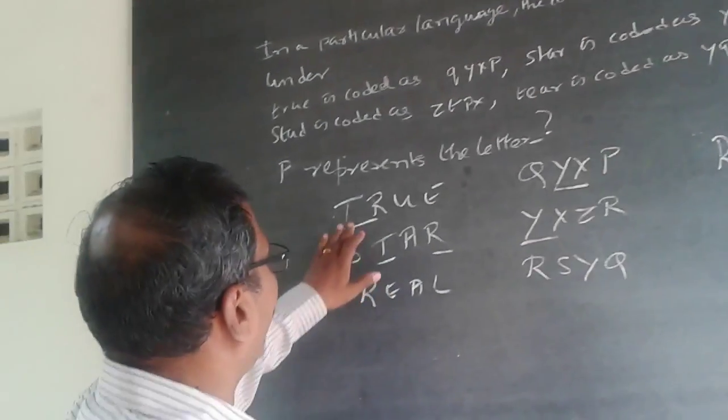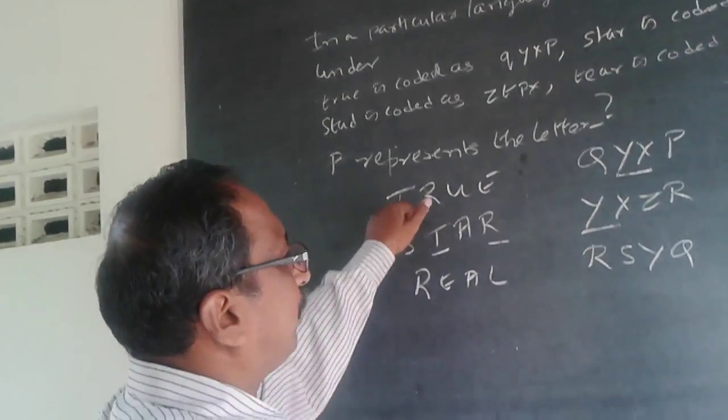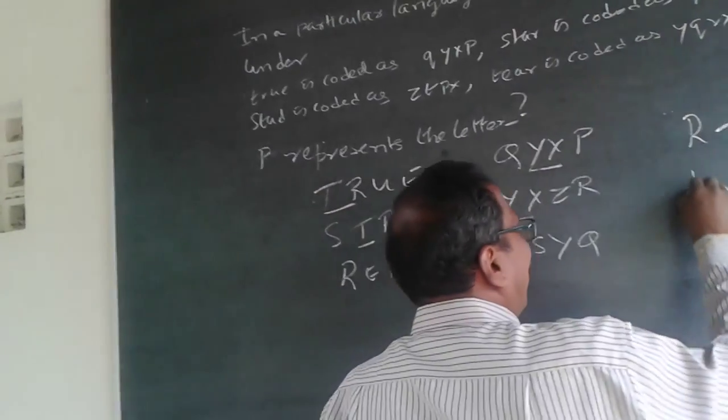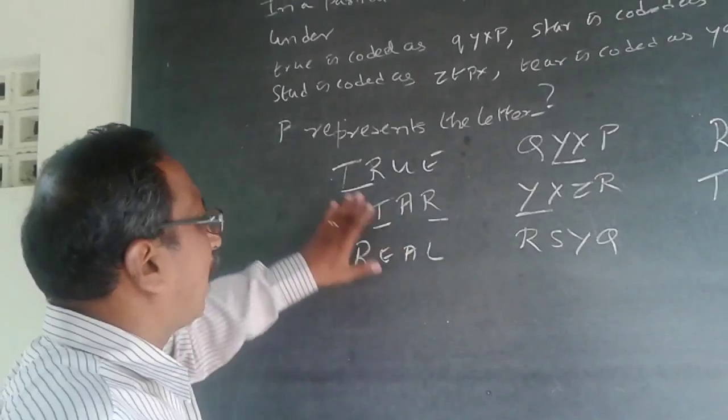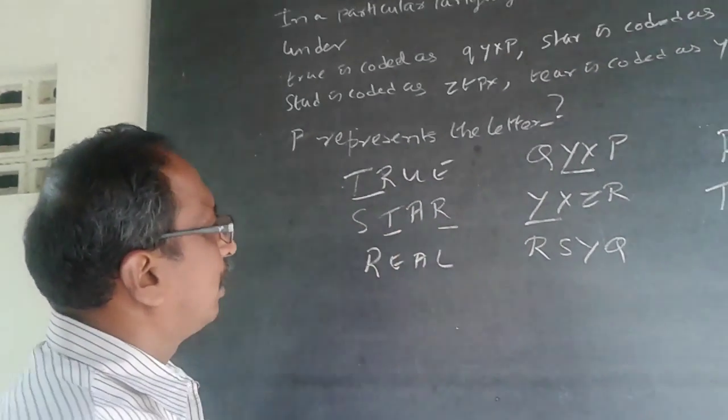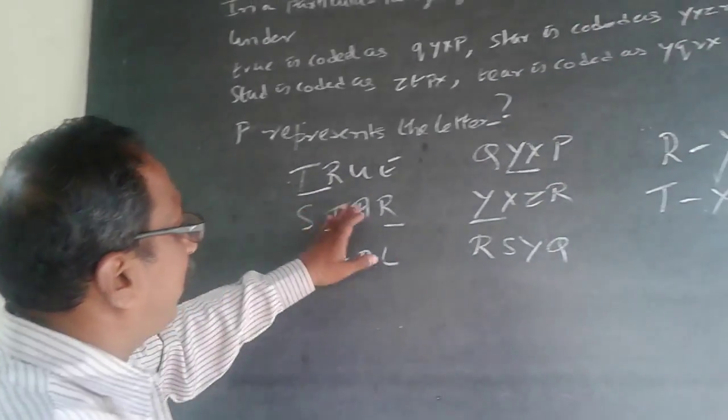I have told you that R is Y, T will be X. Don't try to write each and every letter and map it everywhere. So understand it once. I find R will be Y, T will be X.